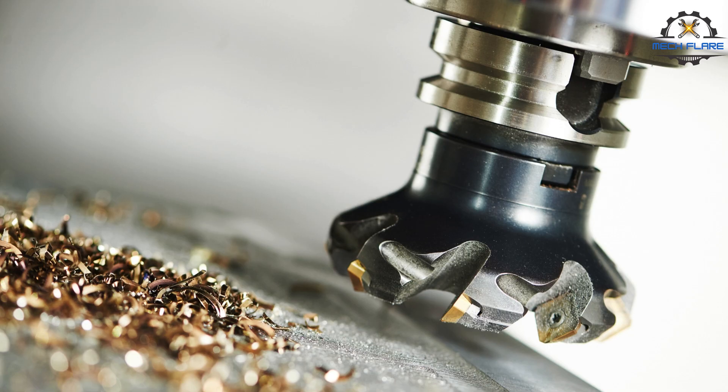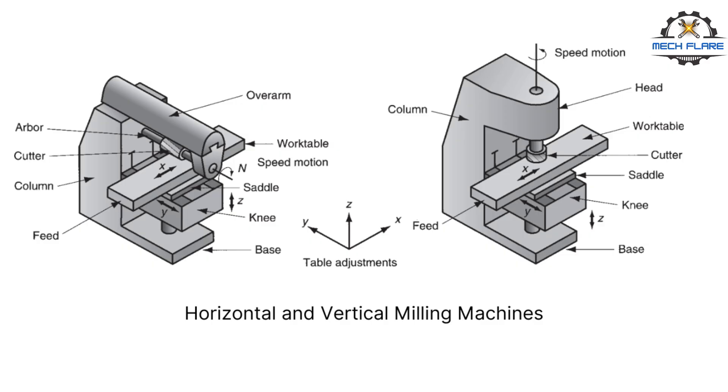The cutting tool in milling is called a milling cutter and the cutting edges are called teeth. The conventional machine tool that performs this operation is a milling machine.